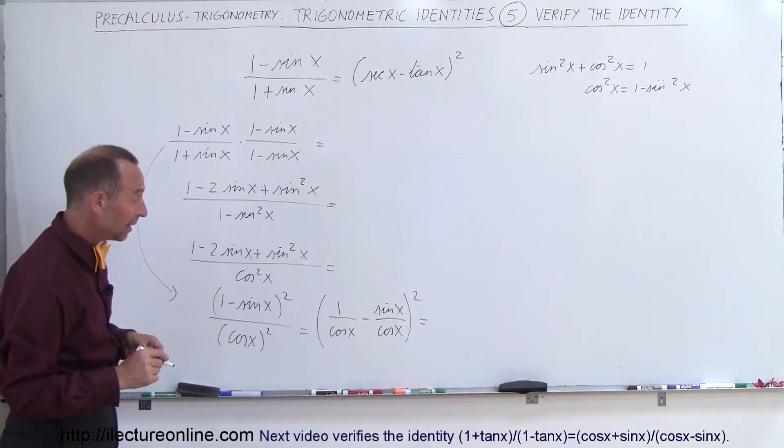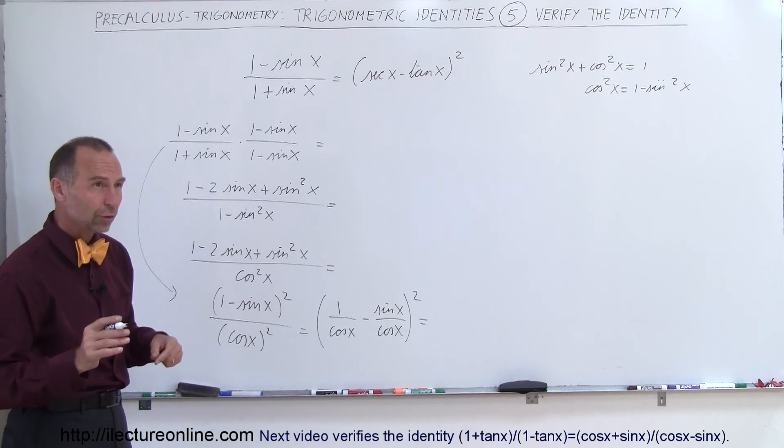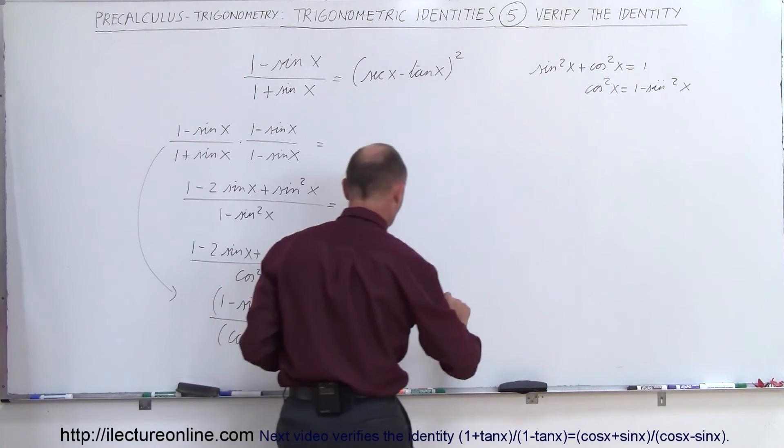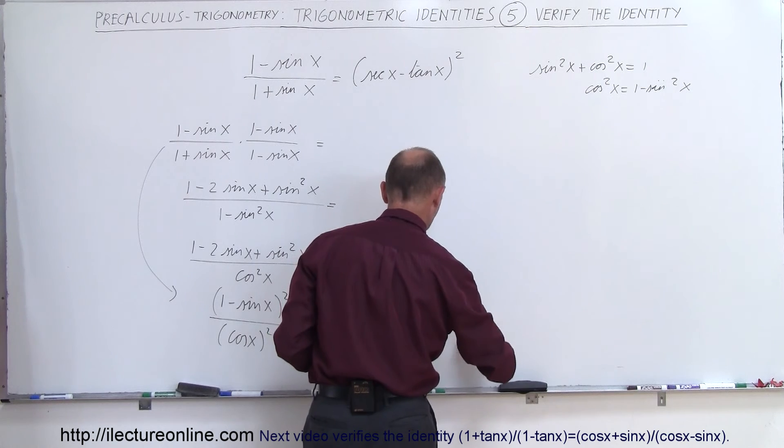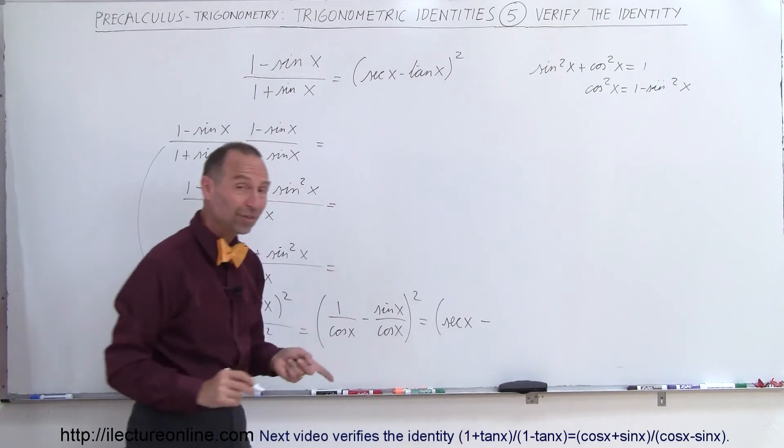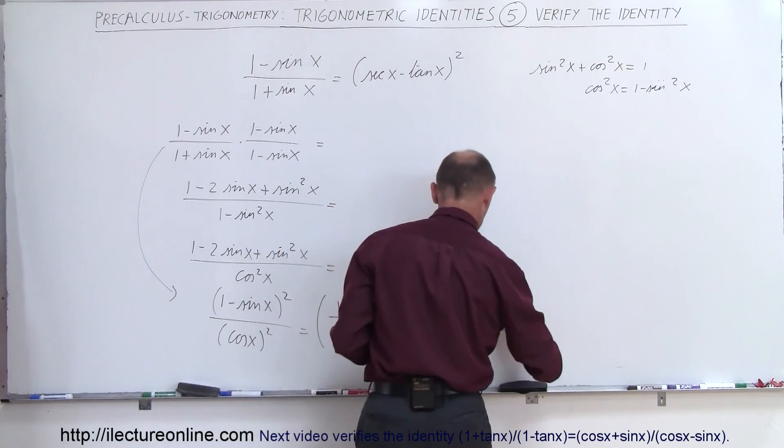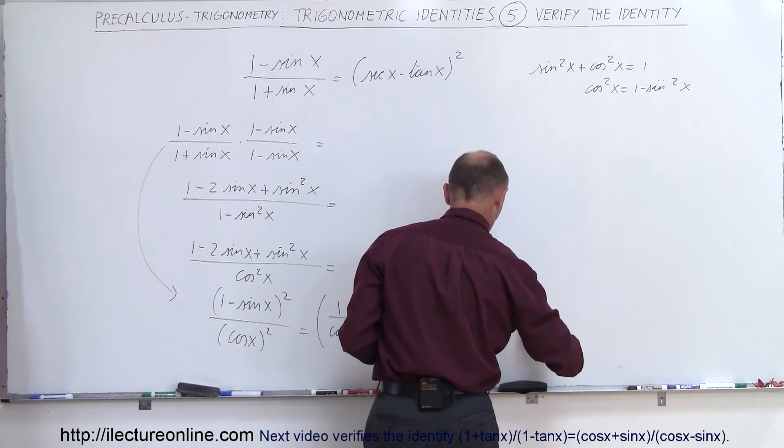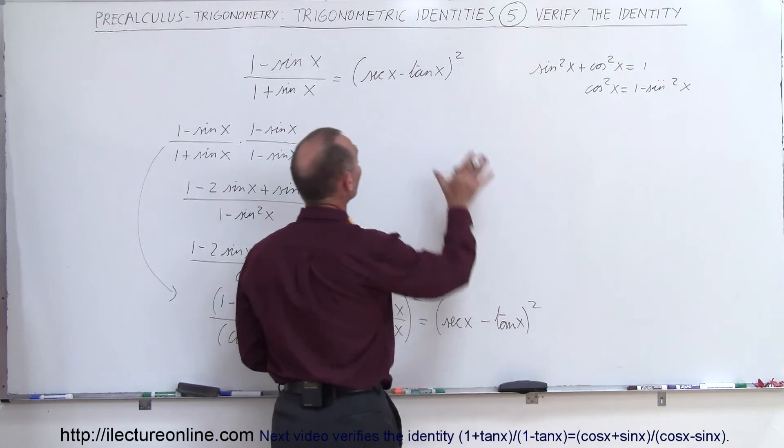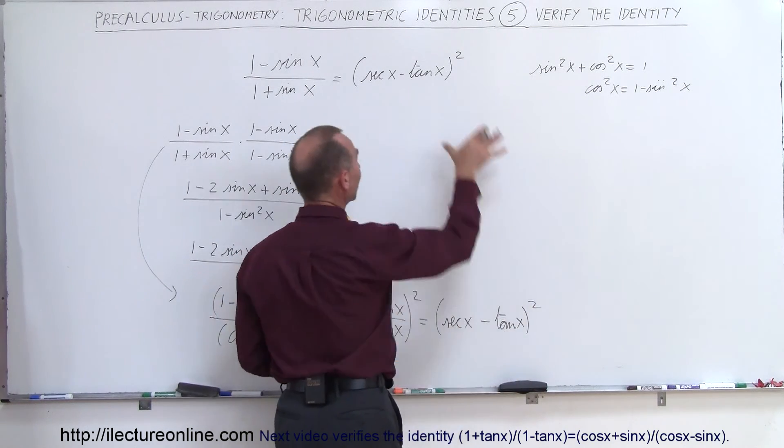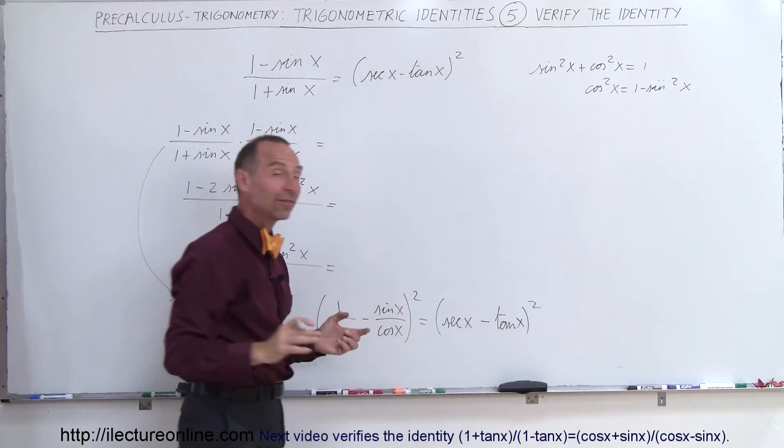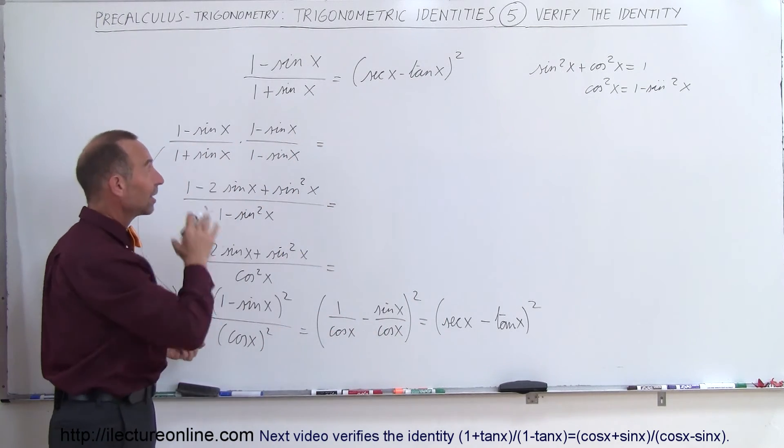And now if I use my identities where 1 over the cosine of x is equal to the secant of x, so this can now be written as the secant of x minus and the sine divided by the cosine is the tangent of x. And the whole thing is squared. Then I look over here and I have the exact same thing as I have over there on the right side. So that's how I proved that the left side equals the right side.